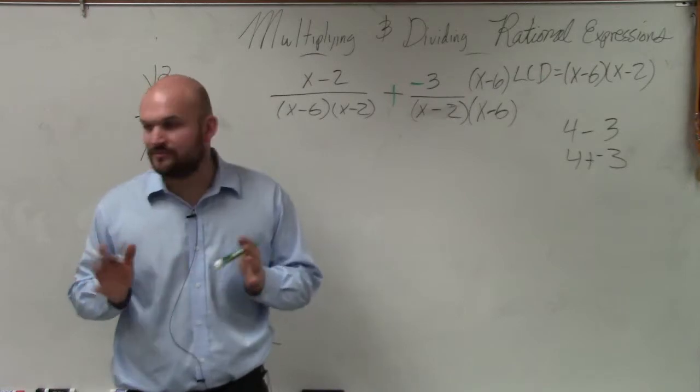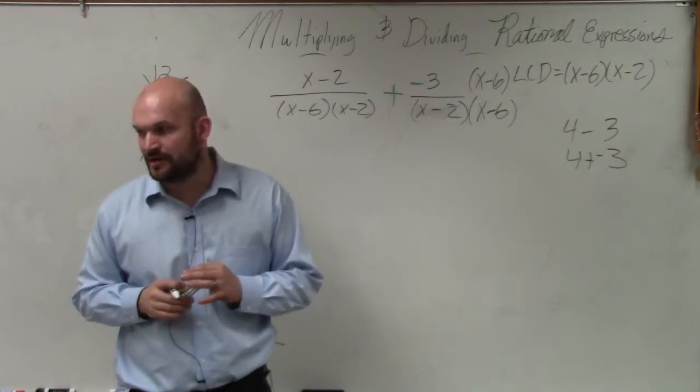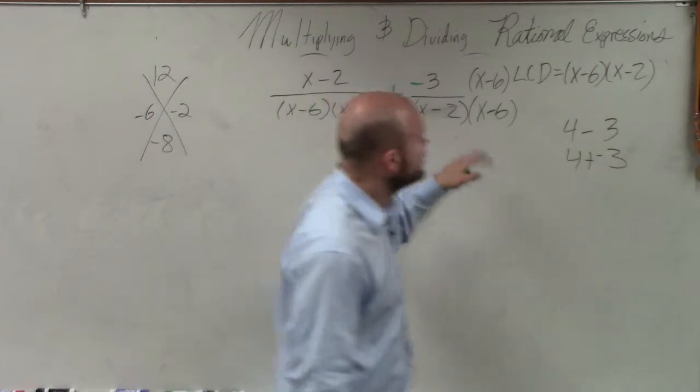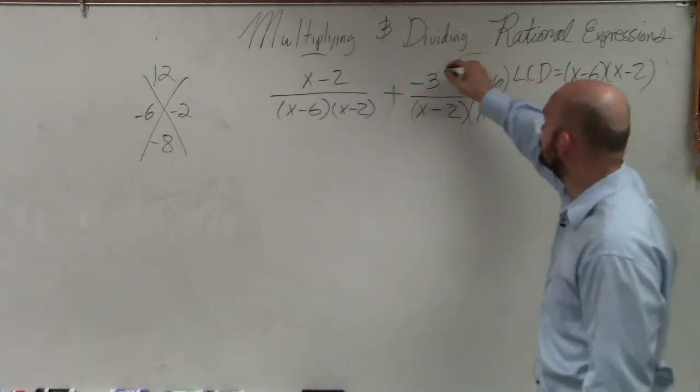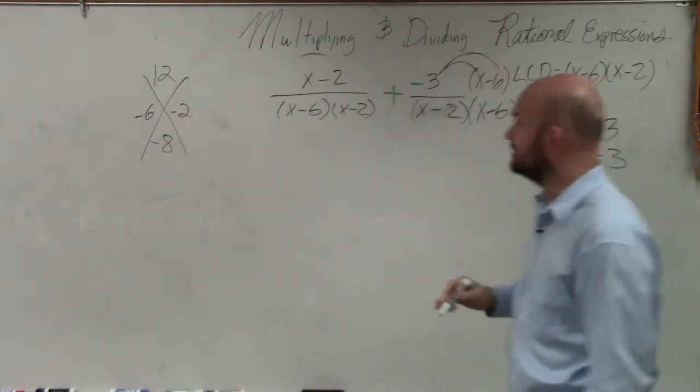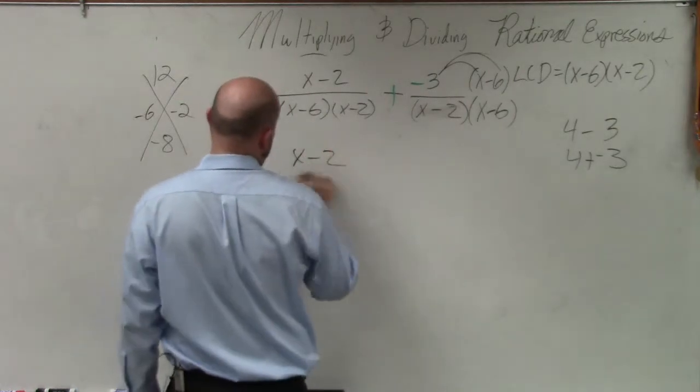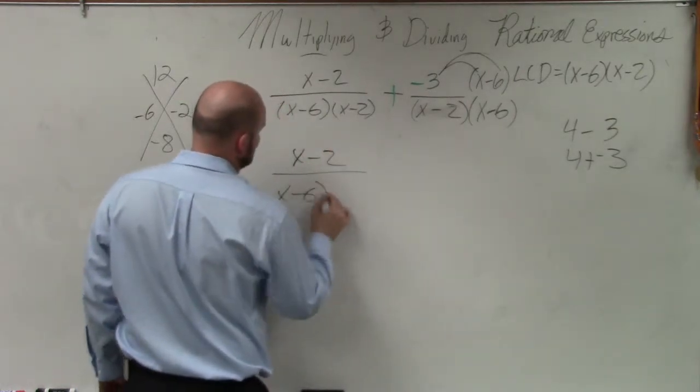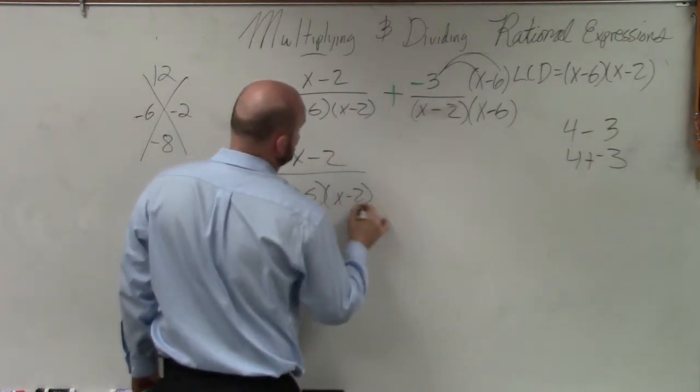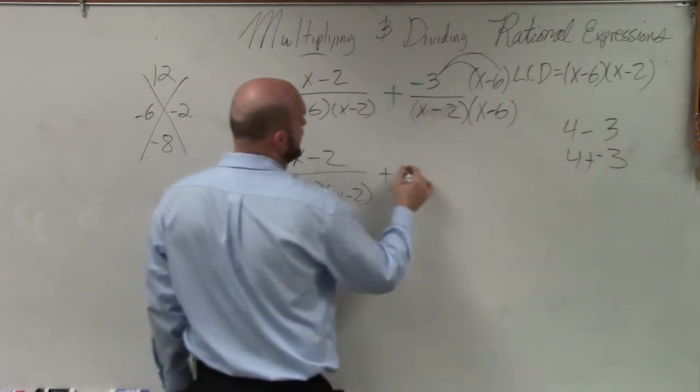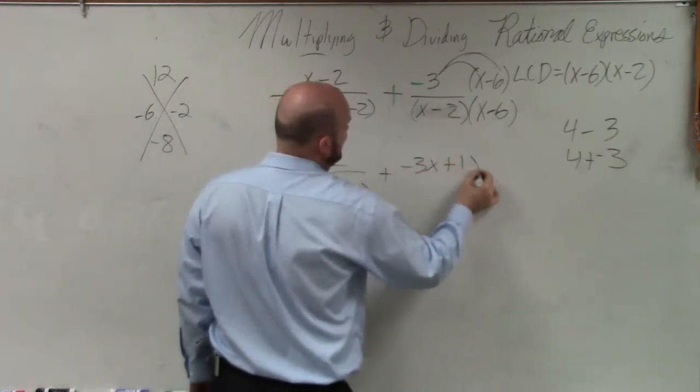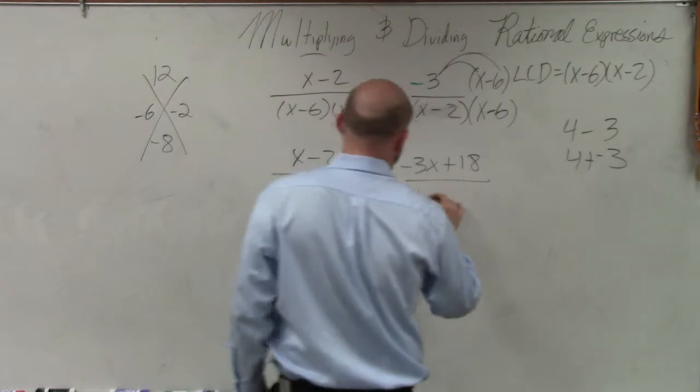I'm literally at the point now where I'm just going to walk around and go through this. You should all be writing this stuff down. So now I basically can distribute my negative 3x to negative 6. So I have x minus 2 divided by x minus 6 times x minus 2, plus a negative 3x positive 18 divided by x minus 2.